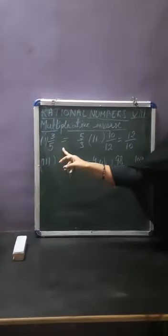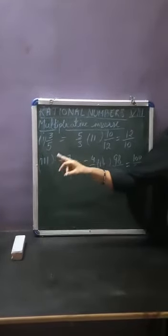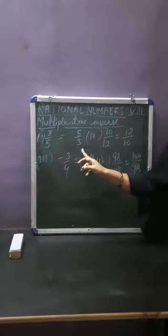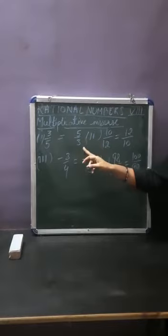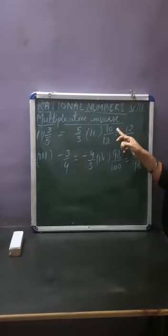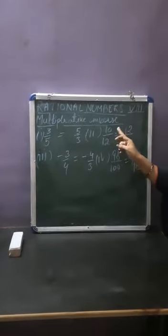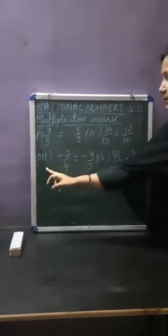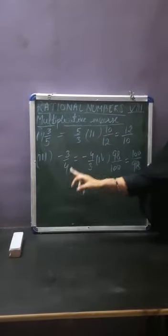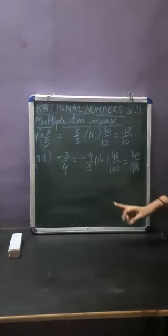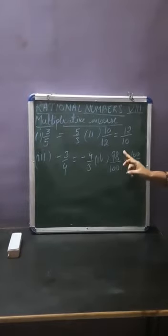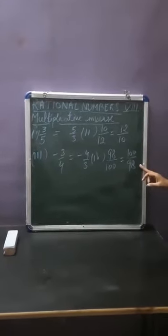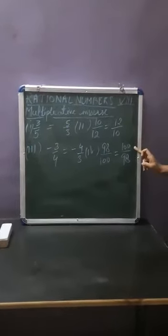To get the multiplicative inverse, you will get the reciprocal of the given rational number. Like 3 upon 5 will be converted to 5 upon 3. In the second part, 10 upon 12 — multiplicative inverse will be 12 upon 10. In the third part, minus 3 upon 4 — reciprocal is minus 4 upon 3. In the fourth part, 98 upon 100 — reciprocal is 100 upon 98. That is called the multiplicative inverse.